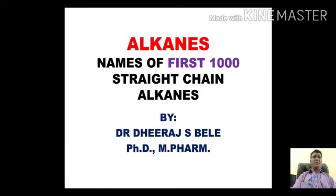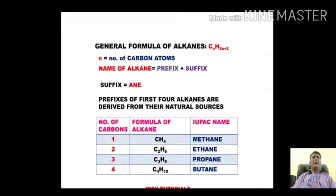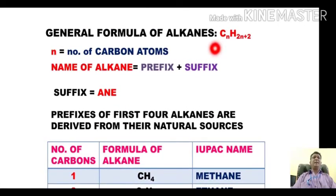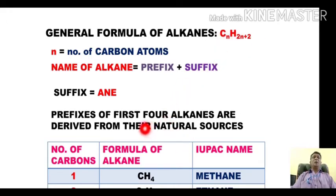Hello dear students, today's topic is very interesting — it is about the names of the first 1000 straight-chain alkanes. The general formula of alkanes is CnH(2n+2), where n is the number of carbon atoms. If n equals 1, it becomes CH4; if n equals 2, it becomes C2H6, and so on.